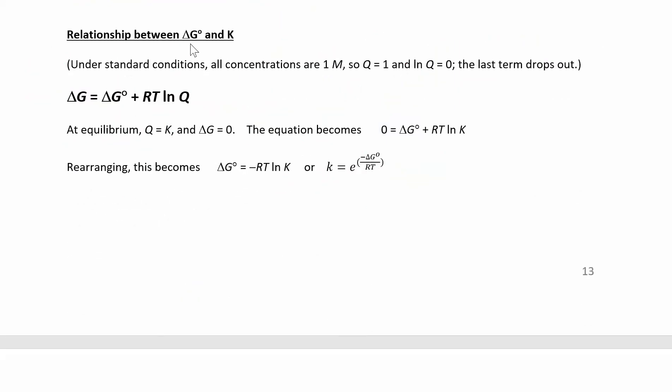Now we can relate delta G naught and equilibrium constant using this equation as well. Under standard conditions, Q is equal to 1. So the natural log of Q is 0, and this whole term just drops out. Under standard conditions, delta G is delta G naught. At equilibrium, Q is equal to K. If we were at equilibrium, this Q is equal to K. And this delta G is 0.